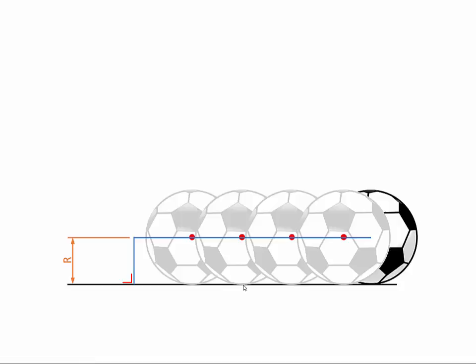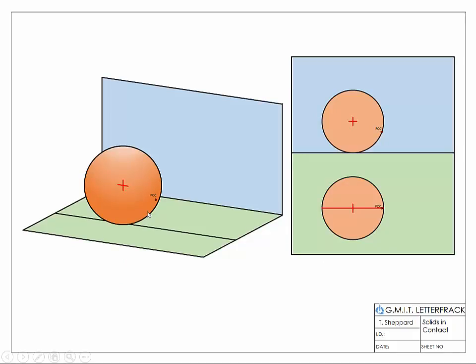A loci is simply more than one locus. Now we're going to look at how to apply that to a question. Here we have a sphere shown in 3D, and in 2D as elevation and plan. On that sphere we have a point of contact, which is going to be the point of contact with a new sphere. The new sphere has to be in contact with the original sphere and with the horizontal plane. From our previous videos, because the point of contact is on the extreme generator, we know the solution is automatically going to be seen in a side-by-side position.